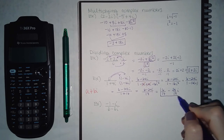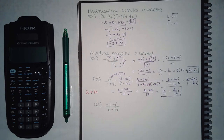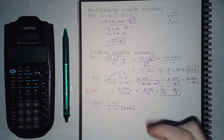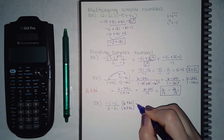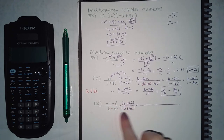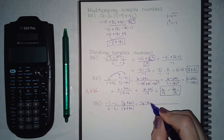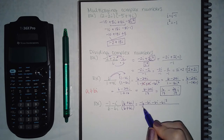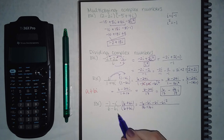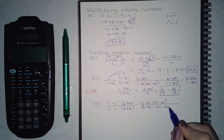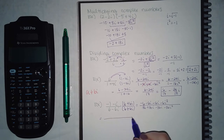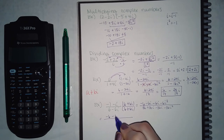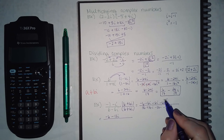The same thing applies here — there's a square root in the denominator with two terms, so multiply by the conjugate with the opposite sign in the middle. The difference in this problem is that you have to FOIL on both the top and the bottom. On the top I get negative 6, negative 6i, negative 6i, and negative 6i squared.